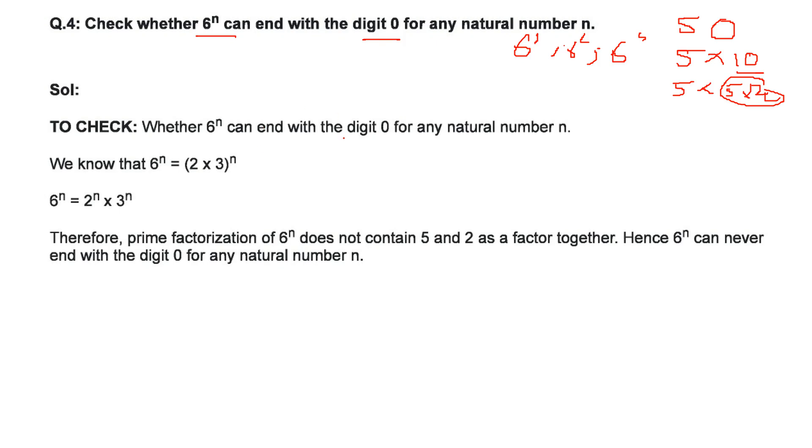That is, we want to check for 0 in the end. So 6 to the power n can be written as 2 into 3, 6 is 2 into 3. Let us take power n. So a into b to the power n is a to the power n, b to the power n.